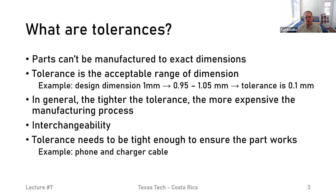So if I have something designed to be a dimension of 1 millimeter and I'll accept anything that's 0.95 to 1.05 millimeters, then my tolerance is 0.1 millimeters — the difference between the upper limit and the lower limit gives us our tolerance. In general, the tighter the tolerance, so the smaller that number is, the more expensive it is to manufacture, because we'll need tools that are more and more precise. So as we're designing things, we may have to have wider tolerances to produce stuff at a reasonable cost.